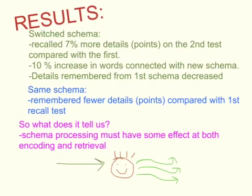So why does it matter? It doesn't prove, but it very strongly supports the idea that schema processing affects us both at the encoding stage — when we're putting information into our memories — and at the retrieval stage, when we're trying to recall that information later on.